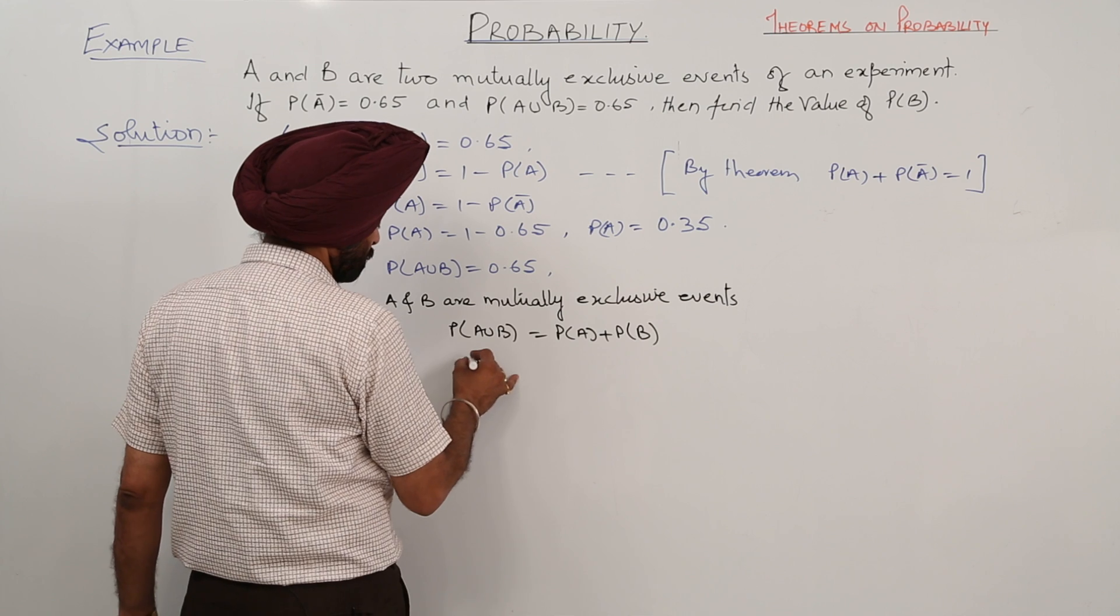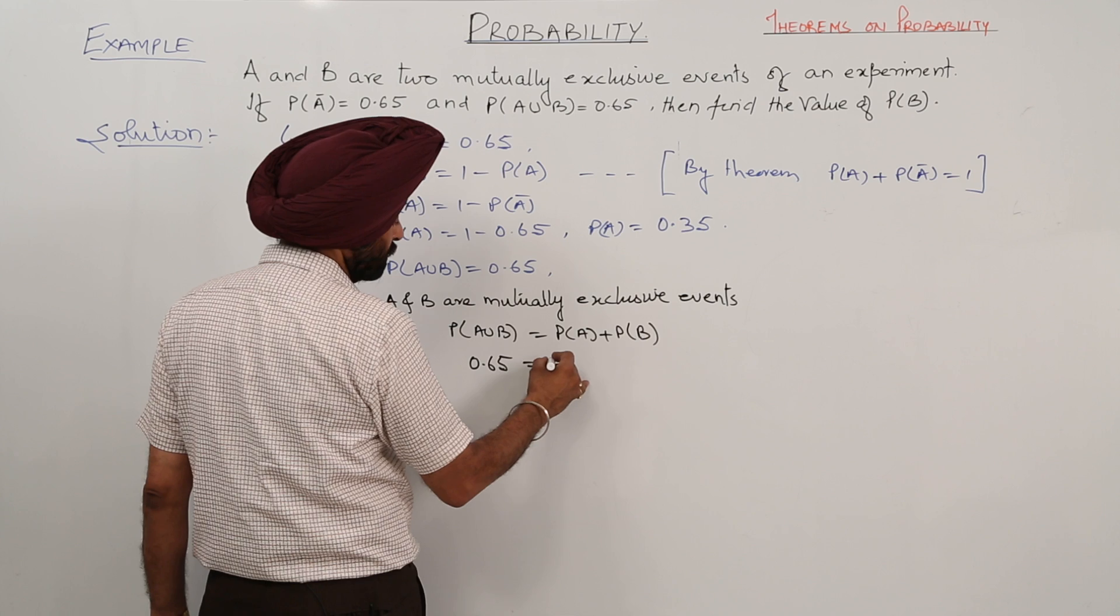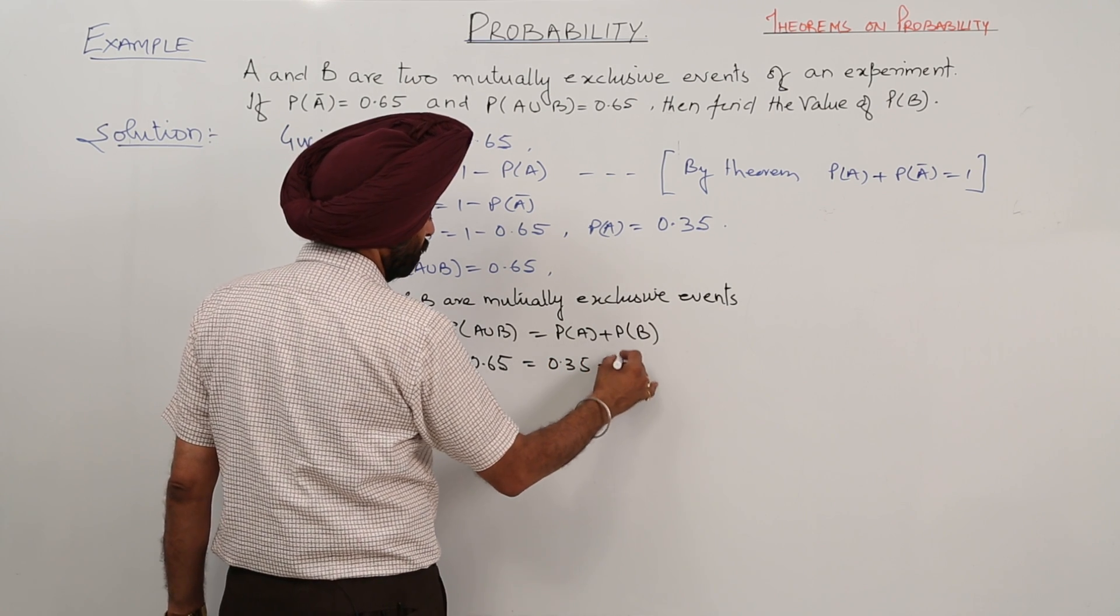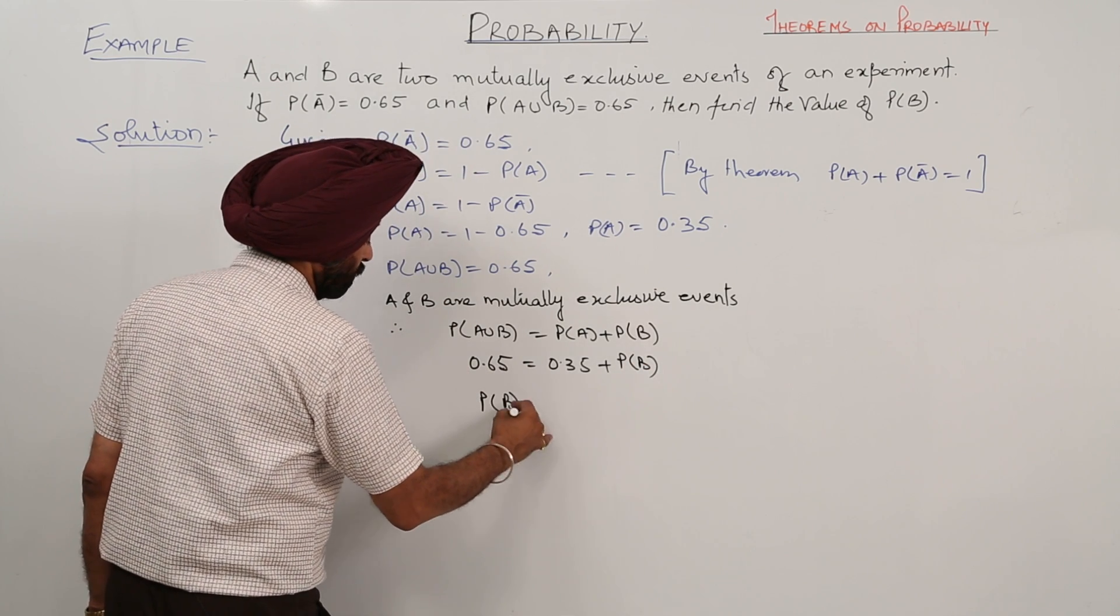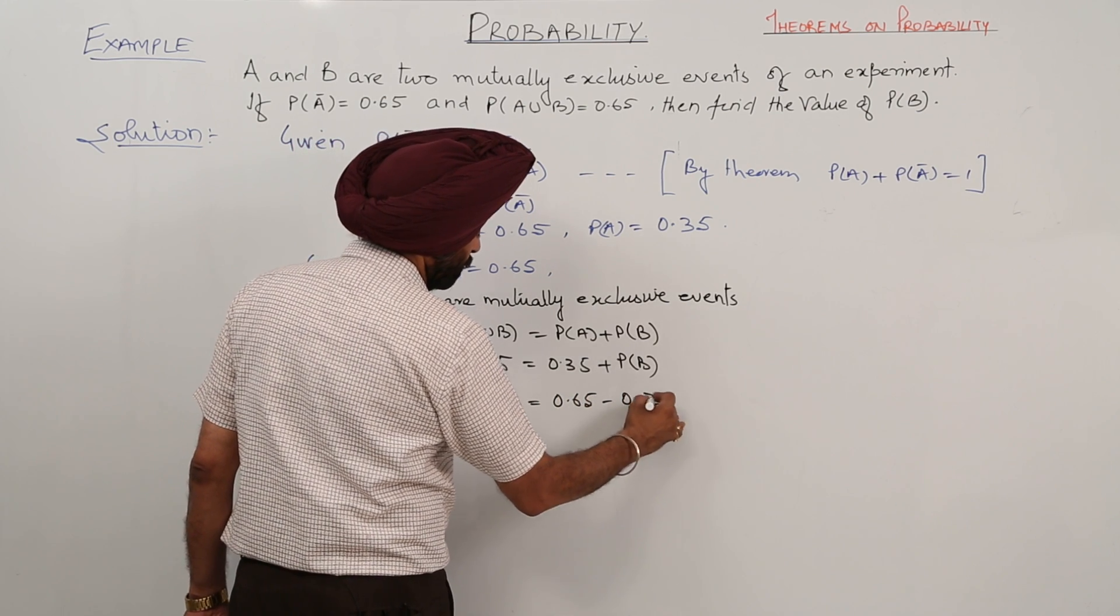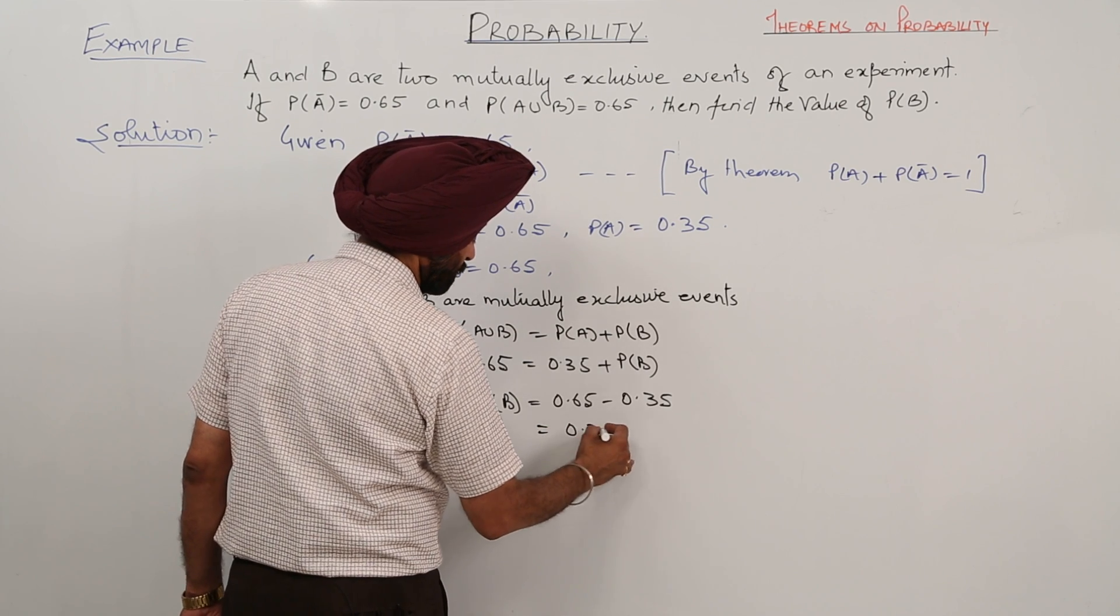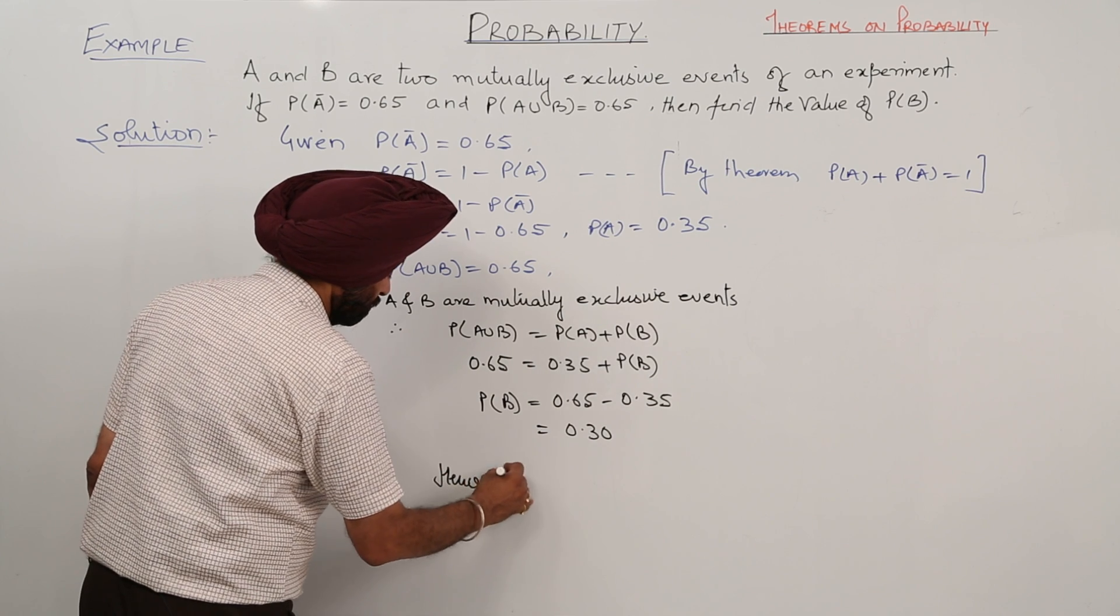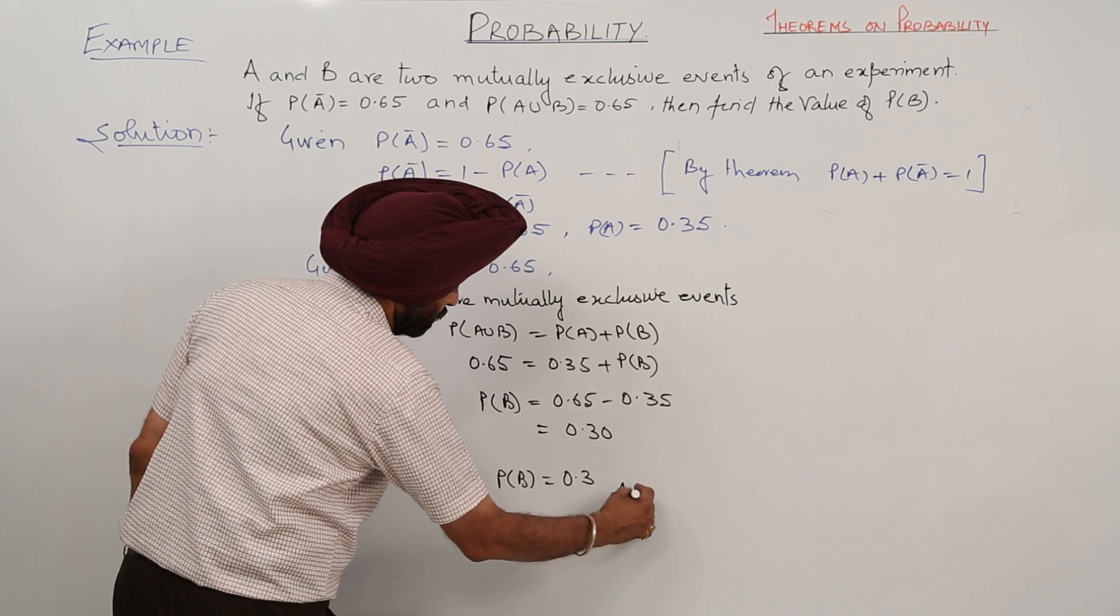Now, 0.65 is equal to 0.35 plus probability for B. Therefore, probability for B is equal to 0.65 minus 0.35, which is equal to 0.30. Hence, probability for B is equal to 0.3.